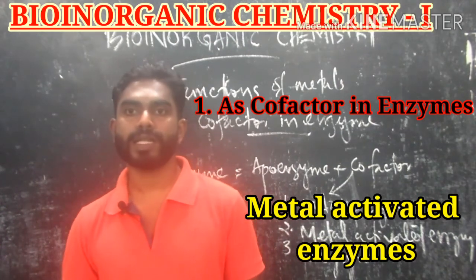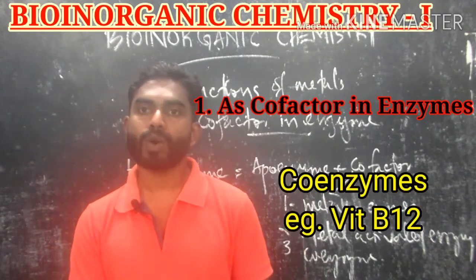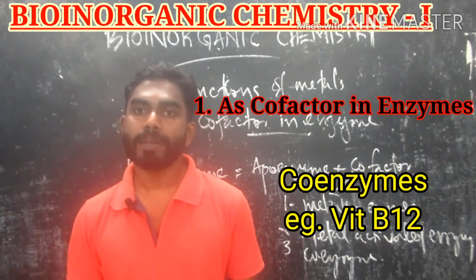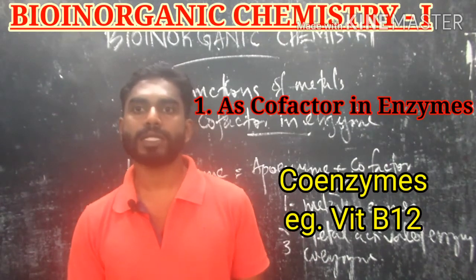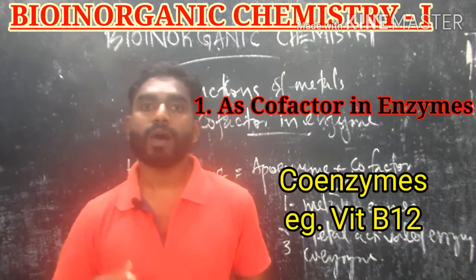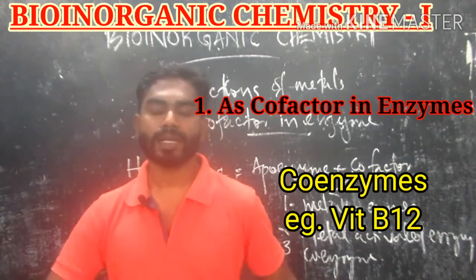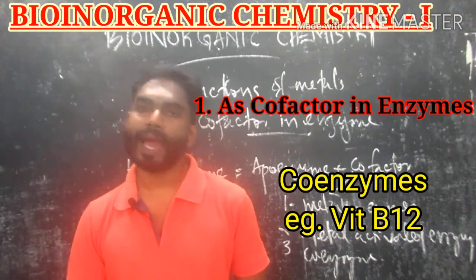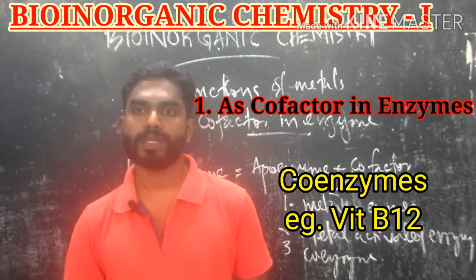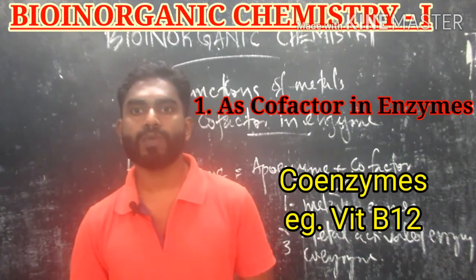The next category is metal-activated enzymes: enzymes that have loosely bound metal ions are called metal-activated enzymes. Here, the presence of the activator metal ion is required for the enzyme to show catalytic activity; the presence of metal must initiate its catalytic activity. Phosphofructokinase is an example of a metal-activated enzyme.